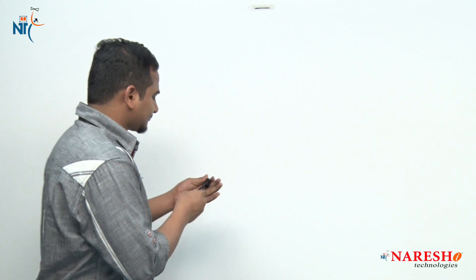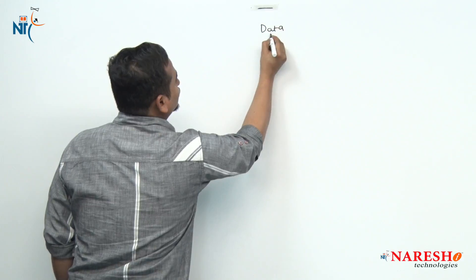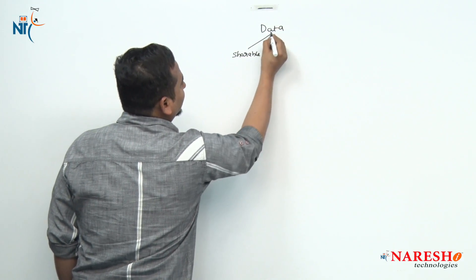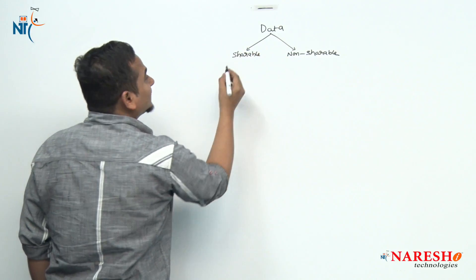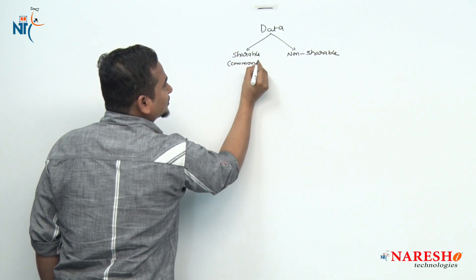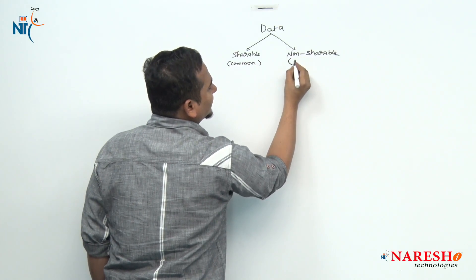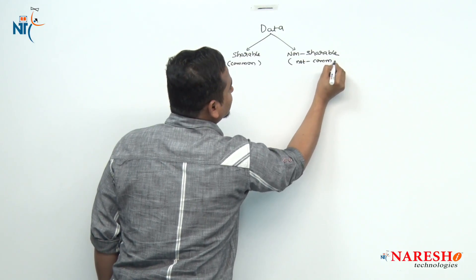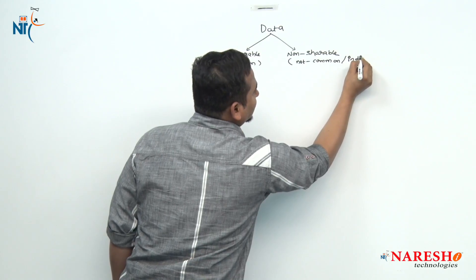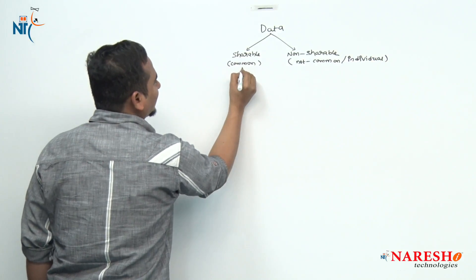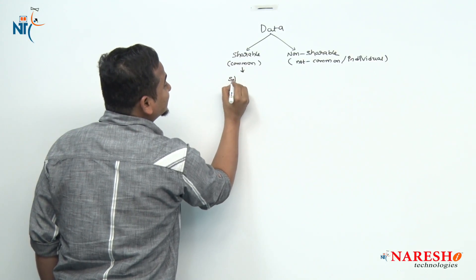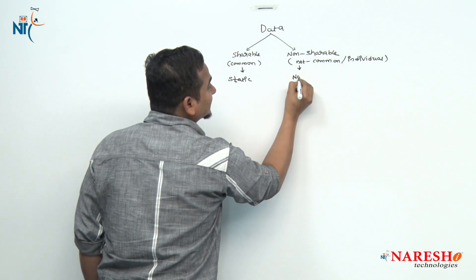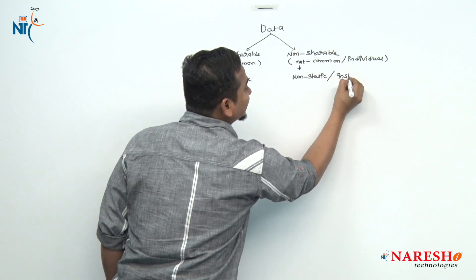Let me give a graphical representation about static and non-static data. Mainly, data has been classified into two types: one is shareable, another one is non-shareable. Shareable also has the terminology 'common data,' and non-shareable has the terminology 'individual data.' Technically in Java language, shareable data we call static data, and non-shareable data we call non-static data or instance data.